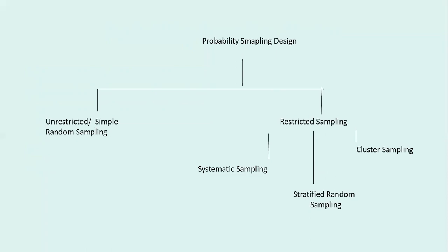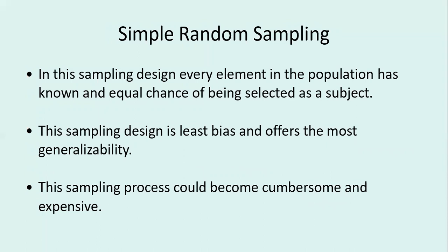Simple random sampling is the least biased sampling design and gives the most generalizability. In this design, every element in the population has known and equal chances of being selected as a subject. However, this sampling process can be somewhat expensive and at times cumbersome.